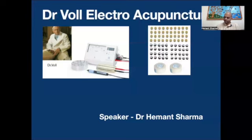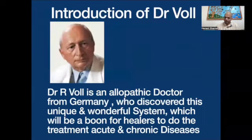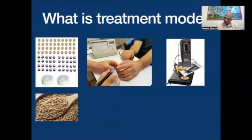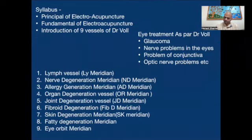So far we have discussed many things about Dr. Bohl — after doing the introduction of Dr. Bohl and the device used by Dr. Bohl. Then we discussed there are 9 extra meridians given by Dr. Bohl, the list of which is given here.